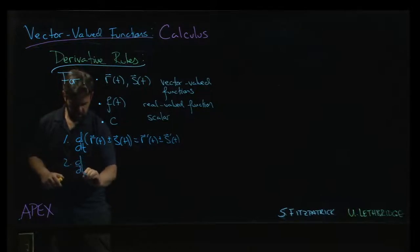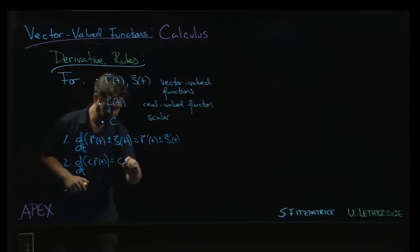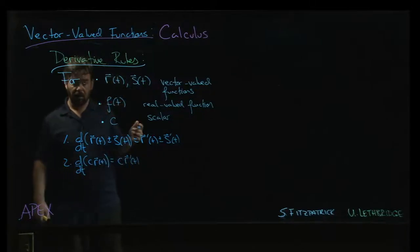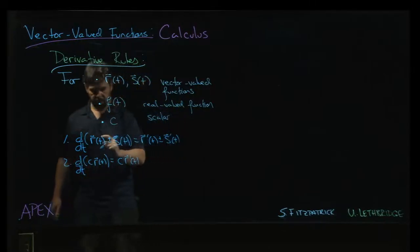And if you are taking the derivative of a scalar multiple, you can pull out the scalar. So it'll be c times the derivative of r, as you might expect. Now, that's for a constant scalar multiple.